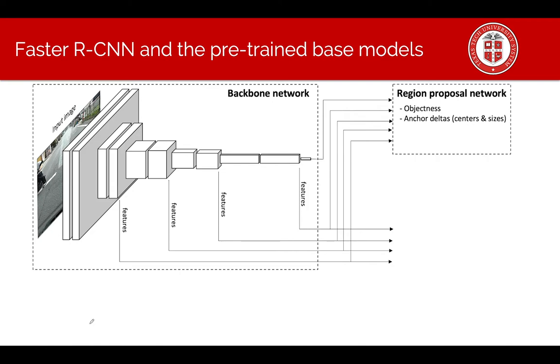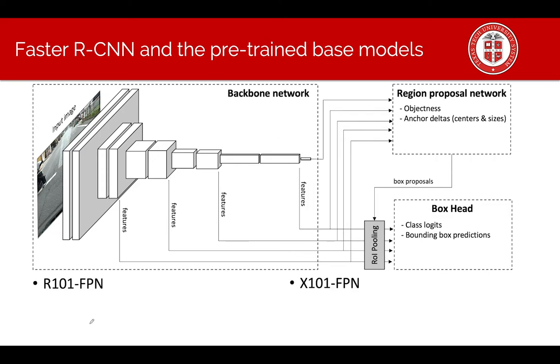The bounding boxes mean the center and size of the anchor boxes related to the original image. When we have the box proposals and extracted features we pass them through a region of interest pooling layer to get standardized input for the next neural network. That next part is called the box head and its job is to fine tune the classification and bounding box predictions.